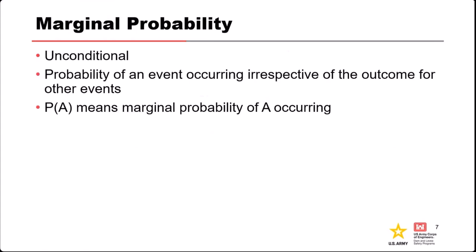The first type of probability we'll discuss is marginal probability. Marginal probabilities are estimated without any conditions placed on them — we estimate the probability of an event irrespective of any other event in our analysis, essentially ignoring all other events. We typically do this in risk analysis when we estimate system response curves or probability of failure for failure modes — we estimate a marginal system response curve for each failure mode.